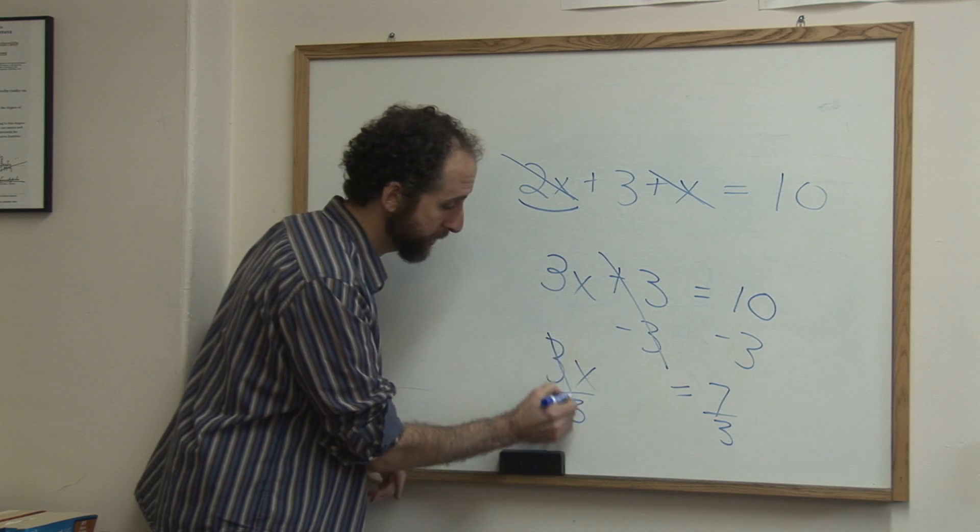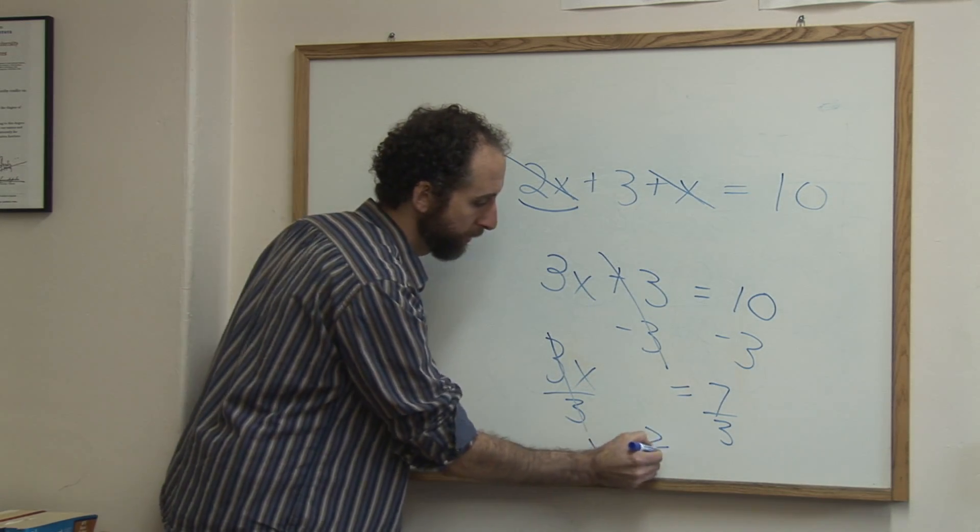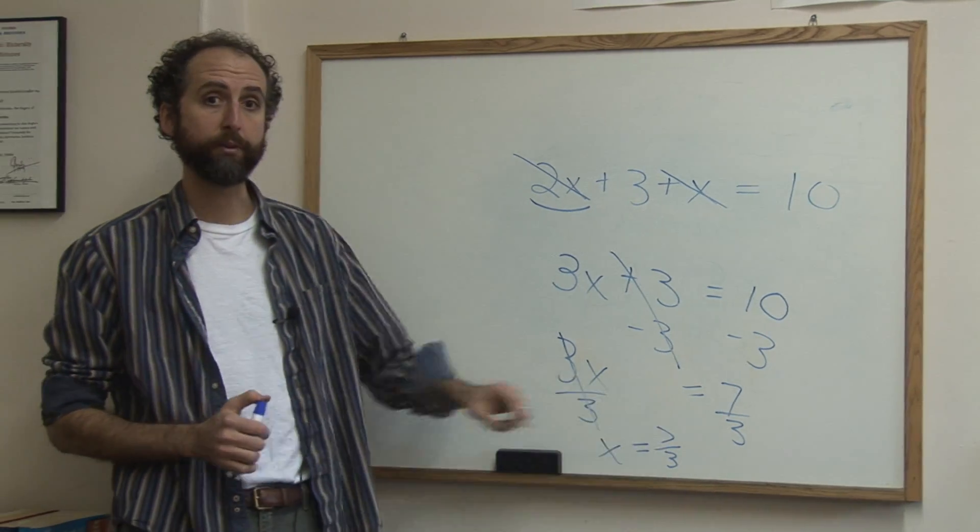So 3 over 3 cancels. That's why we did it. Giving me x alone equals 7 thirds. And that's your final answer: x equals 7 thirds.